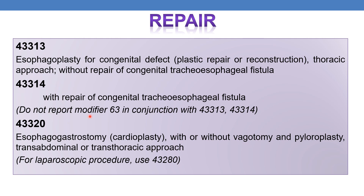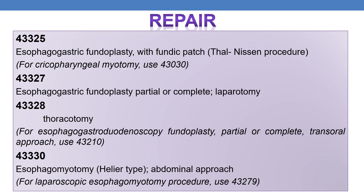One important point: do not report modifier 63 in conjunction with 43313 and 43314, because the congenital defect is already mentioned in the code descriptor, so you need not append modifier 63. The next CPT is 43320 — esophagogastrostomy, cardioplasty, with or without vagotomy and pyloroplasty, transabdominal or transthoracic approach. For laparoscopic approach, use 43280. CPT 43325 deals with esophagogastric fundoplasty with fundic patch — Thal-Nissen procedure. For cricopharyngeal myotomy, use 43030.